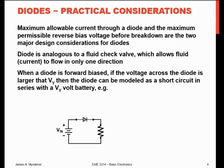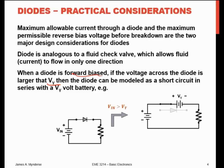When a diode is forward biased and the voltage is larger than that forward bias voltage, the diode can be modeled as a short circuit in series with a battery. Our model essentially looks like this: the diode is replaced with a short circuit, and we insert this battery with positive on one side and negative on the other. So when we apply Kirchhoff's voltage law and go around this loop, we have VS minus VY minus VR — so it's modeled as a voltage drop in our circuit.